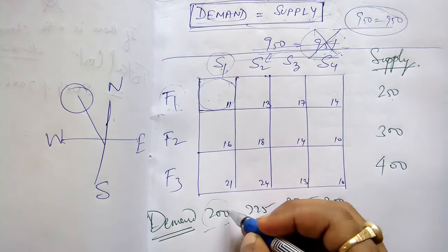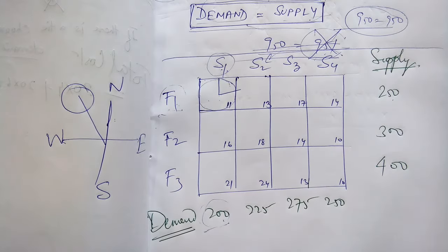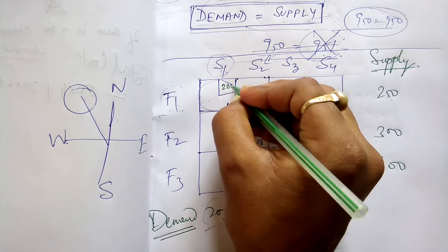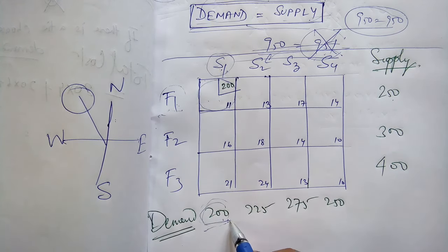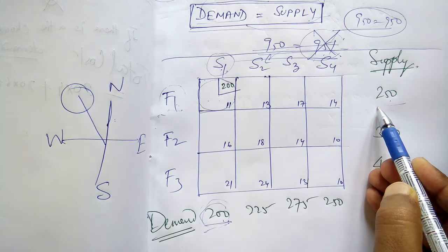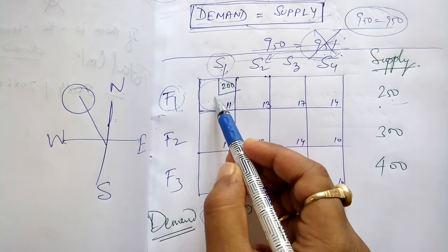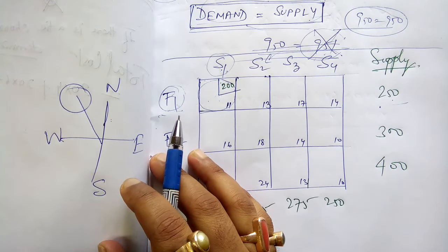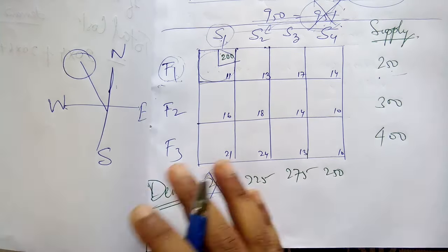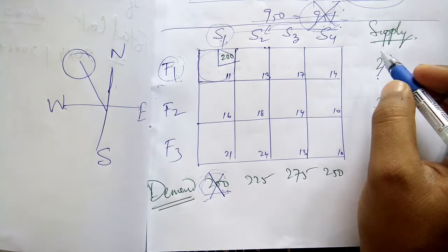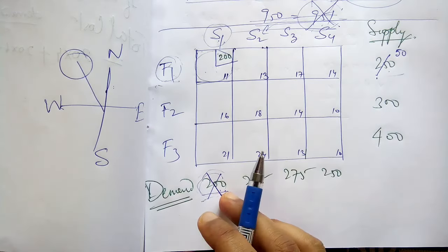If the demand is less than the supply, then fulfill the demand. The demand of 200 is less than the supply of 250, so Factory 1 will supply all 200 goods to Store 1. The demand of Store 1 is now 0 because it is fulfilled. How much is left with Factory 1? It is 50.